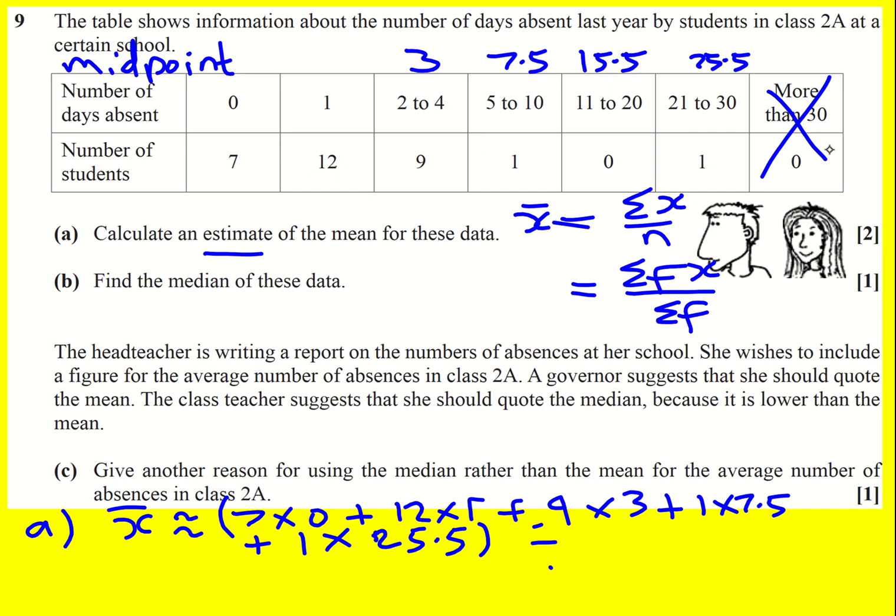If I add these up, I've got 30, so the sum of f is going to be 30. If you put that into a calculator, that actually gives 72 divided by 30, which gives a nice round number of 2.4. So that is your answer for the mean. You have to use this formula and work out the midpoints.